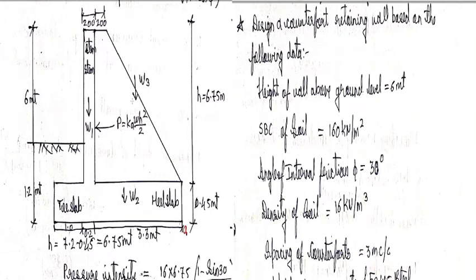Height of the wall above ground level is 6 meter. That means height of the wall above ground level is 6 meter. If you see in the diagram, so this is ground level. So height of the wall above this ground level is 6 meter.